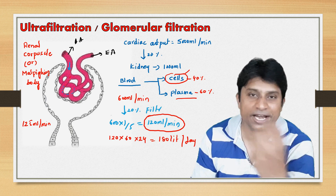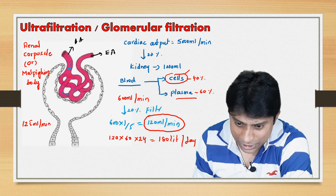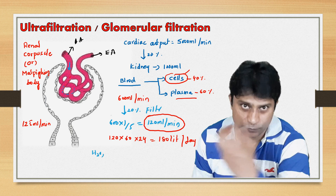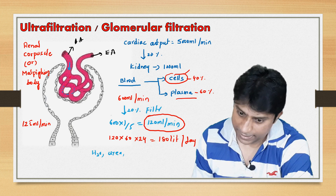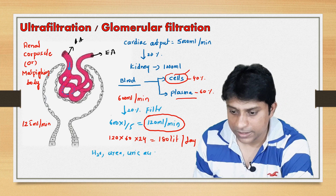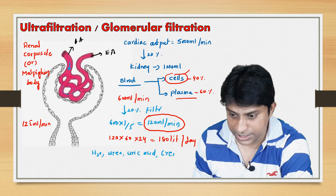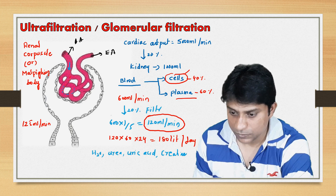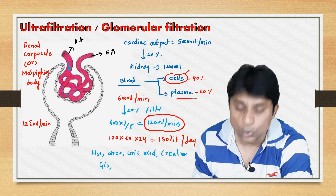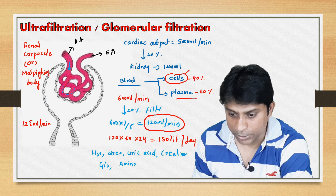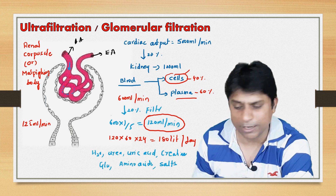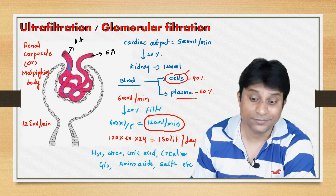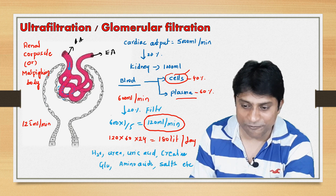What does the glomerular filtrate consist of? It consists of water, urea, uric acid, creatinine, glucose, amino acids, and salts such as sodium, potassium, calcium, magnesium, chloride, bicarbonate, and others. That is the composition of the glomerular filtrate that is formed.